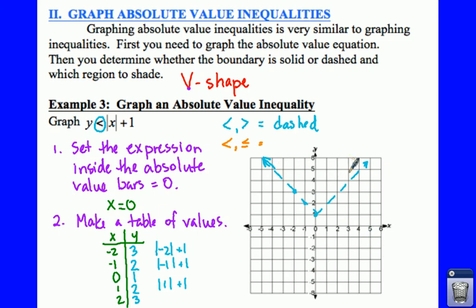Or would it be everything above my line? Well, y's gets smaller as you go down. So that means you would want to shade everything that is below your graph. So if we shade everything that is below the graph, that would be everything down this way.